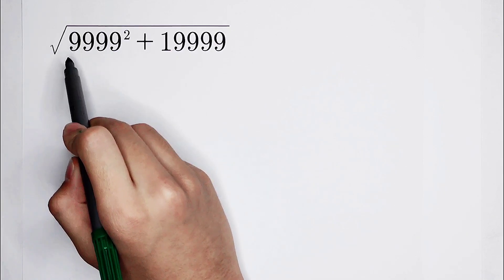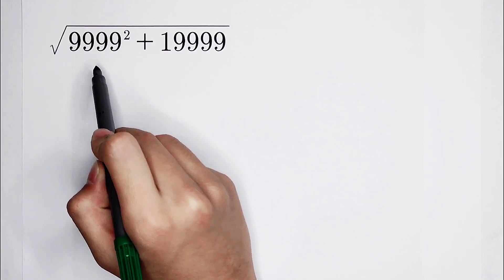Welcome to MathWinno. Calculate square root of 9999 squared, then plus 19999.